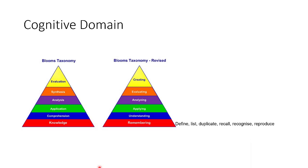Starting with the bottom level, remembering: you can use active verbs like define, list, duplicate, recall, recognize, reproduce. At this level, it does not really require deep thinking or deep learning. The second level is understanding: you can classify, describe, give examples, select, and interpret. You discover that it is going a little bit higher than the first.